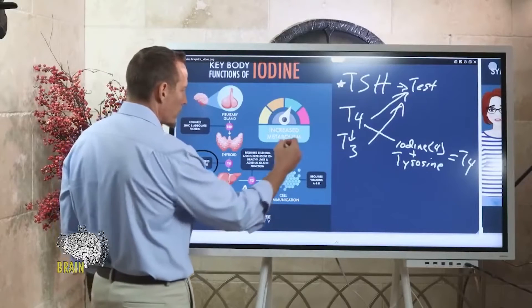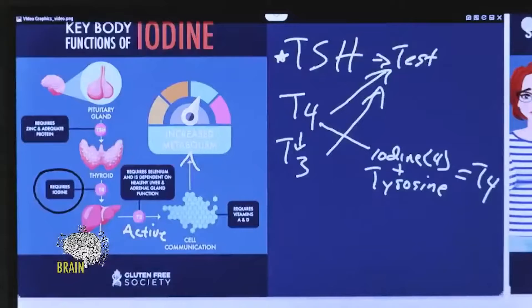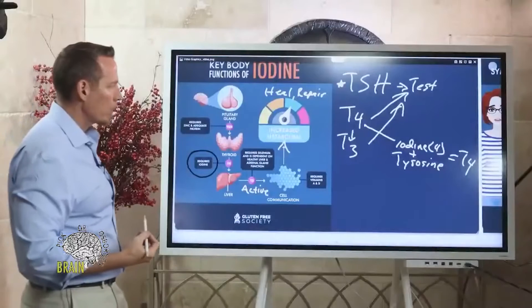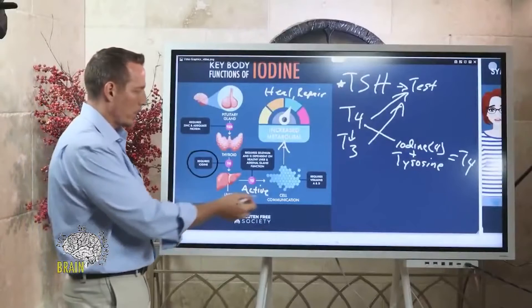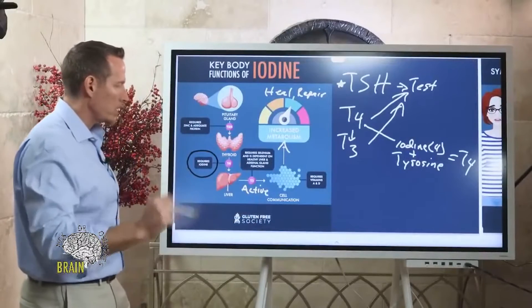T3 is required to increase metabolic function. This is important because you can't heal — you can't repair tissue — if you don't have adequate thyroid hormone.